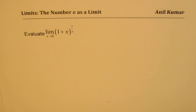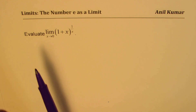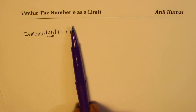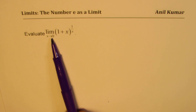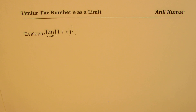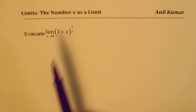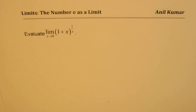Since we are talking about limits, it is very interesting to note that the limit of 1 plus x to the power of 1 over x, when x approaches 0, is also e. We'll actually prove this using three different ways.